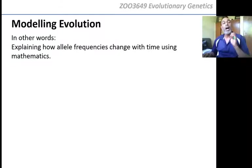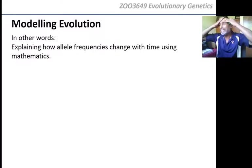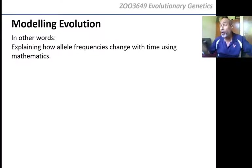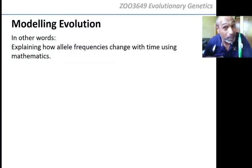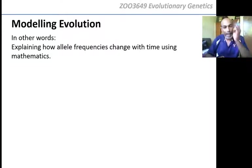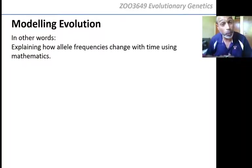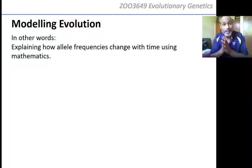Modeling evolution — how do you model something that's been going on for billions of years? It's easy, because it affects the population from one generation to the next. The population is evolving, not the individual. So we just need to take a population and measure its allele frequency, and then compare it to what we would expect if that population had no evolution. Then we will know if the population is evolving.